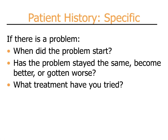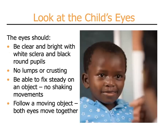If the patient or caregiver does reveal a problem in the history, you should explore this: when did the problem start? Has the problem stayed the same, become better, or gotten worse over time? What treatment have you already tried? As you look at the child's eyes, the eyes should be bright and clear with white sclera and black round pupils in the center. There should be no lumps or crusting of the eyelids. The child should be able to fix steadily on an object with no shaking eye movements, and should be able to follow moving objects with both eyes together and then with each eye individually.